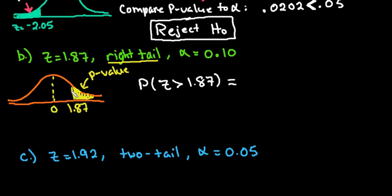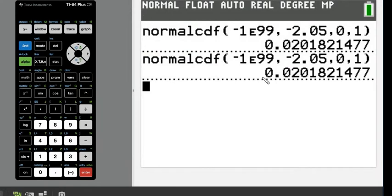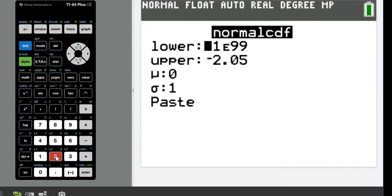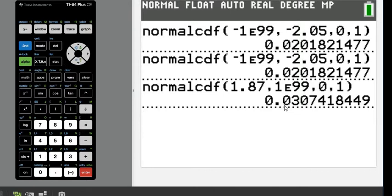And for this one, since we started shading at 1.87, and we don't stop shading, then we're going to go up to positive infinity. So when I enter this one, I'm going to enter it slightly different. For this one, I'm going to do second distributions, normal CDF. My lower in this case would be the 1.87, and my upper would be the 1 E99, which represents positive infinity. And then we would just hit paste, and we get 0.0307.